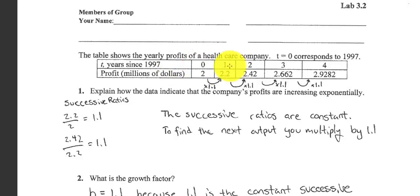So this would be 97, 98, 99, and so on. This is four years after 97, or 2001. Okay, so it says explain how the data indicate the company's profits are increasing exponentially.